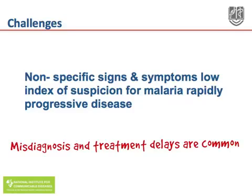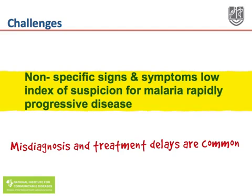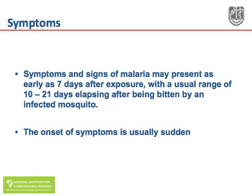In many communities and amongst healthcare workers, there is frequently a low index of suspicion for malaria, and malaria is a rapidly progressive disease requiring urgent treatment. Symptoms and signs of malaria may present as early as 7 days after exposure, with a usual range of 10 to 20 days after being bitten by an infected mosquito.